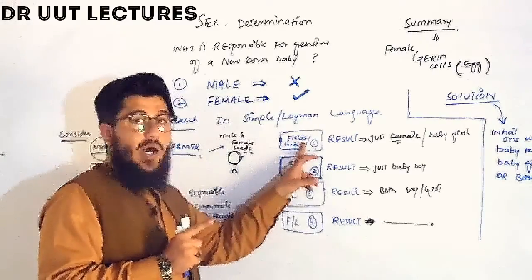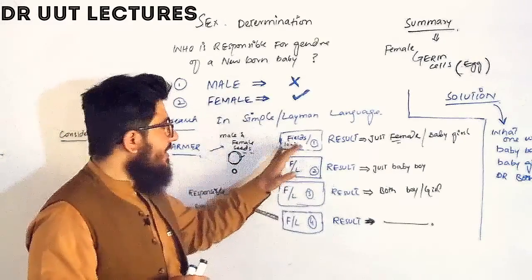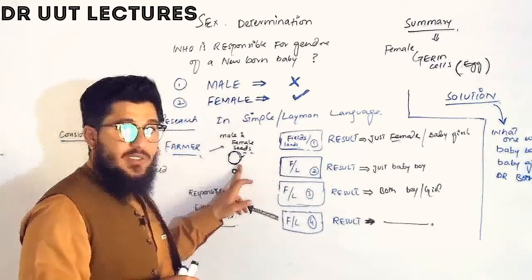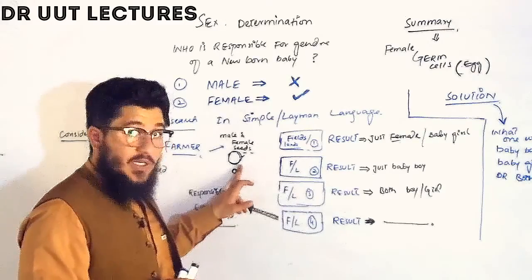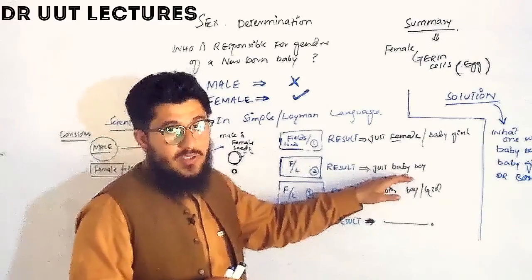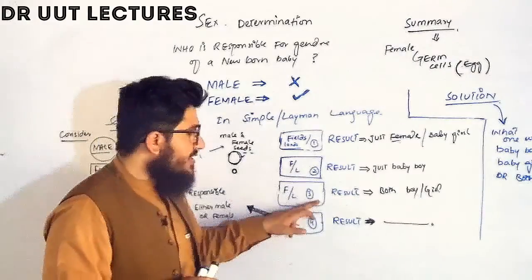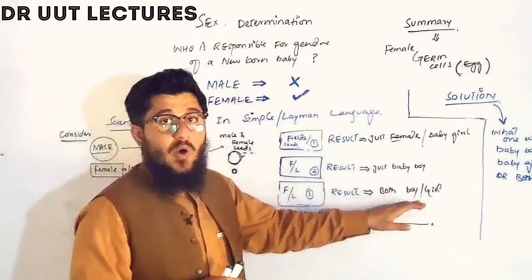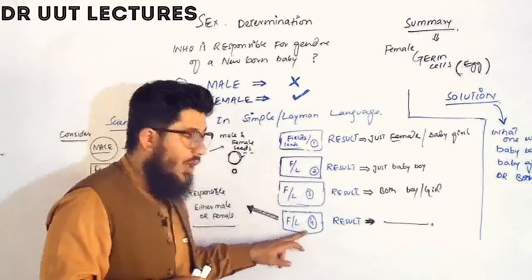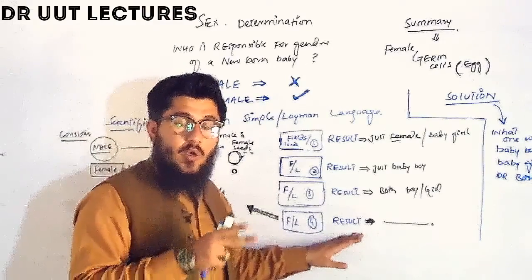Suppose this is the first wife of this person, this is the second, third and fourth. Now when this person is ejaculating in this first wife, she is giving birth to females only. And when the same person is ejaculating sperms in his second wife, she is giving birth to boys. And when the same person is ejaculating in his third wife, she is giving birth to both the boys and the girls. And when the same person is ejaculating in the fourth wife, she does not give birth to any, neither boy nor a girl.